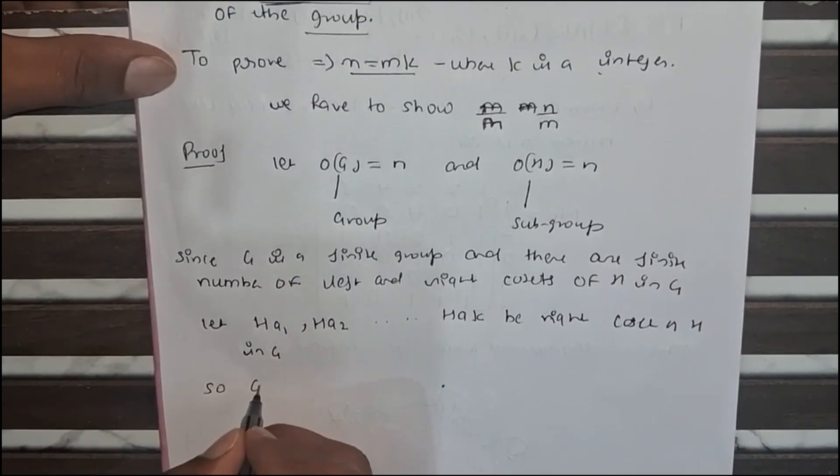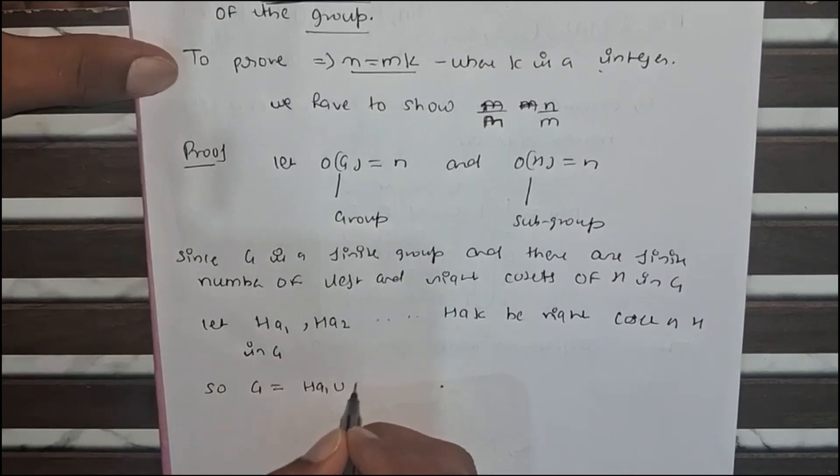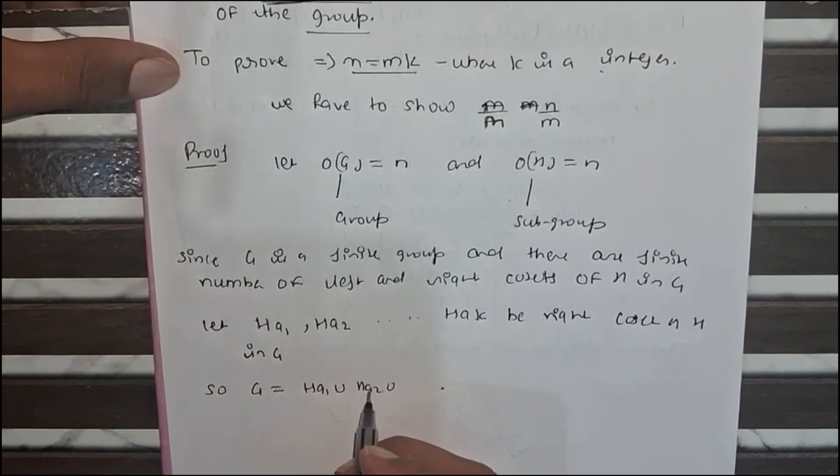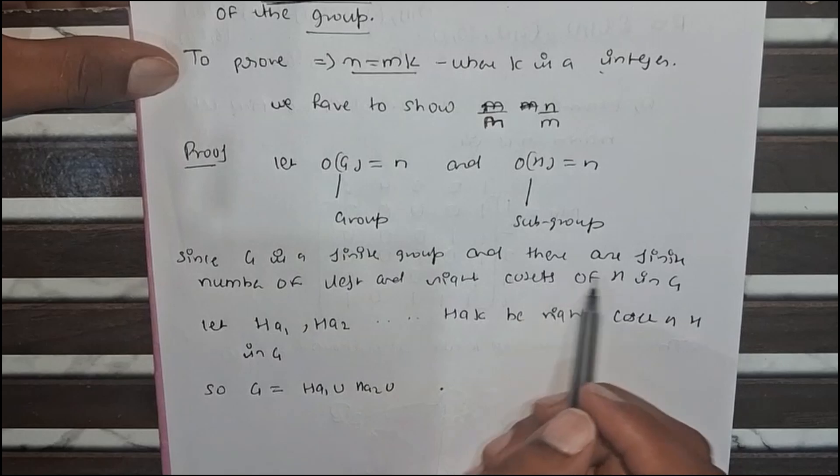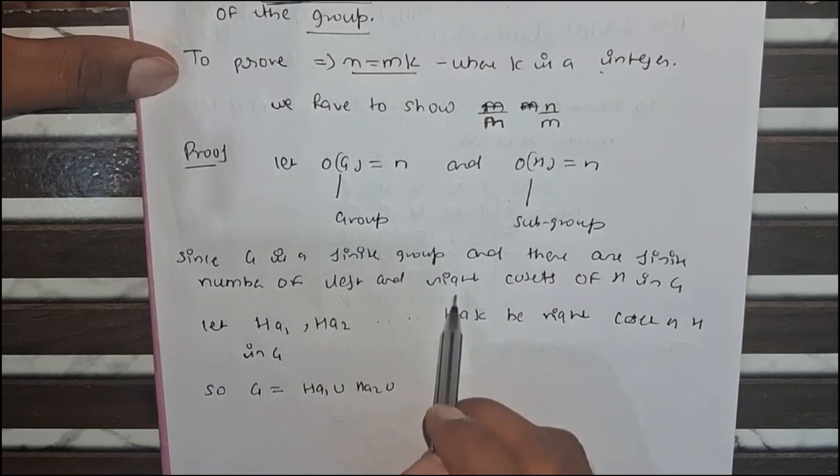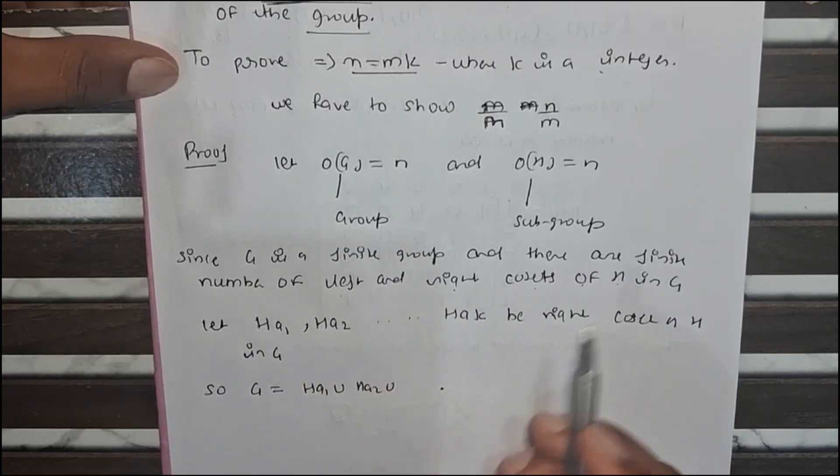So g equals h a1 union h a2. Why we take the union? Because we already know that there are finite numbers of left and right cosets of h in g.